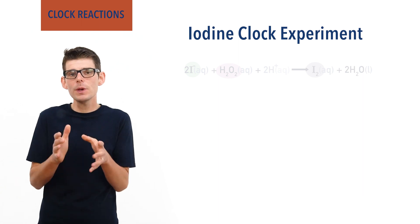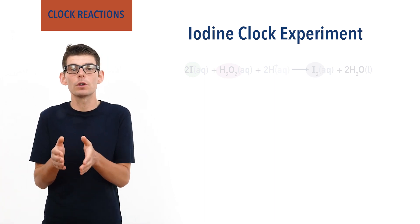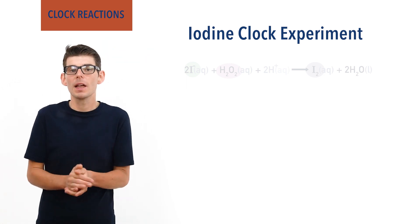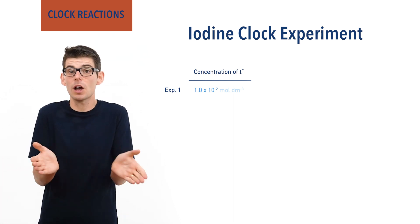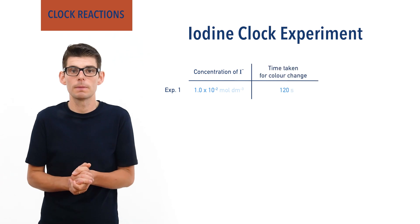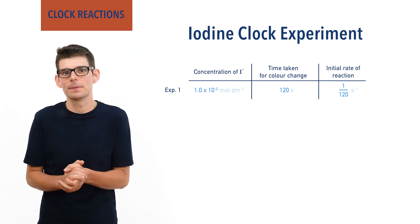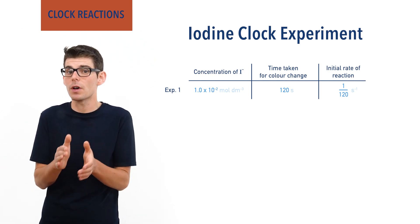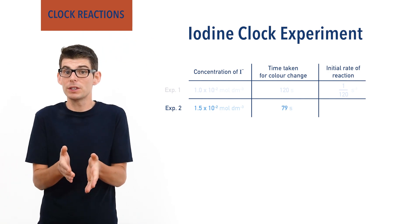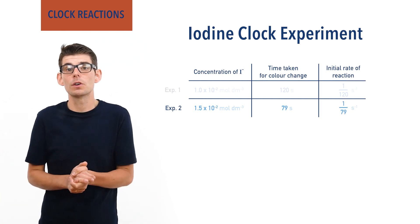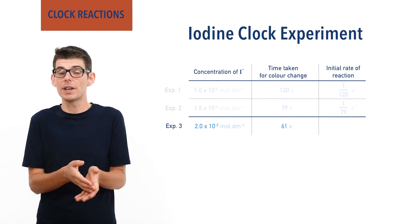To take this one step further, if we control the concentration of iodide ions as well, we can also investigate how the initial rate of reaction changes depending on the concentration of iodide ions. For example, imagine we carry out the iodine clock experiment using a concentration of iodide ions of 1×10⁻² mol dm⁻³, and the time it takes for the colour change to occur is 120 seconds. The rate therefore can be considered as 1/120 — remember, rates are per second, i.e., s⁻¹. The process is repeated using a concentration of 1.5×10⁻² mol dm⁻³, giving a time of 79 seconds and a rate of 1/79. And then again using a concentration of 2×10⁻² mol dm⁻³, this time taking 61 seconds for the colour change to occur, giving a rate of 1/61.